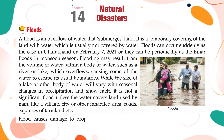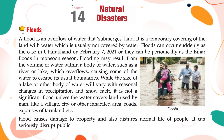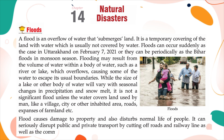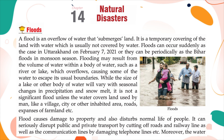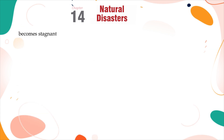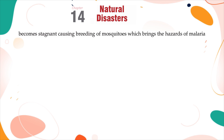Flood causes damage to property and also disrupts normal life of people. It can seriously disrupt public and private transport by cutting off roads and railway lines, as well as communication lines by damaging telephone lines. Moreover, the water becomes stagnant, causing breeding of mosquitoes, which brings the hazards of malaria and other waterborne diseases.